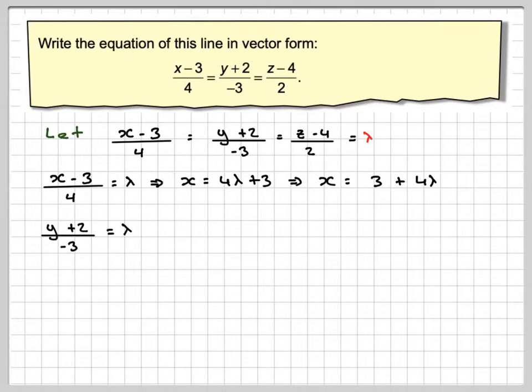The next one we've got y plus 2 over minus 3, so making y the subject, we get y is equal to minus 3 lambda minus 2, but we're going to write that as minus 2 minus 3 lambda.